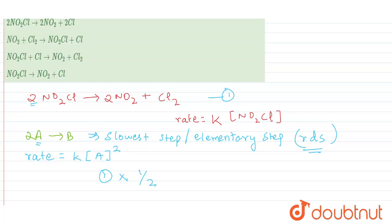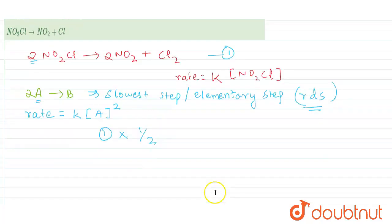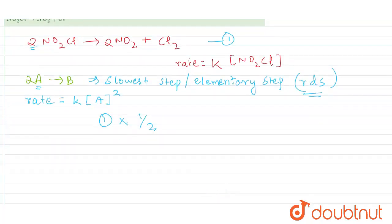So when we multiply this first reaction with half, what is the product which we are going to get now? In this case, what will happen is, we will have 2NO2Cl becomes NO2Cl. And this becomes NO2. And this becomes Cl.